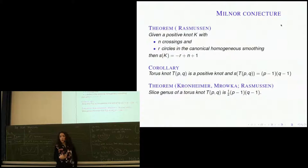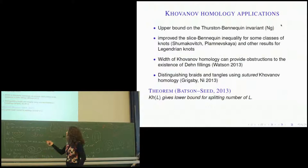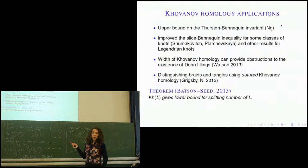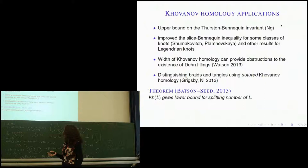This was used by Jake Rasmussen to prove the Milnor conjecture — also known as the Kronheimer-Mrowka theorem proved via gauge theory. For positive knots, the Rasmussen invariant has a nice form depending only on the number of crossings and circles in a homogeneous smoothing. Torus knots are positive knots, so you compute the s-invariant and conclude the slice genus of a torus knot is (p−1)(q−1)/2, which is what Milnor conjectured. Other applications: Thurston-Bennequin number bounds by Shumakovitch, Plamenevskaya, and Lenny Ng, and obstructions to Dehn fillings.